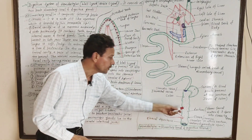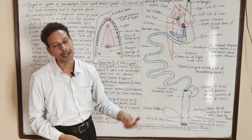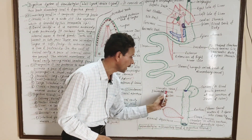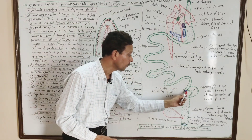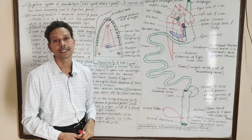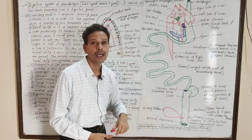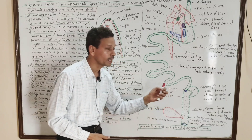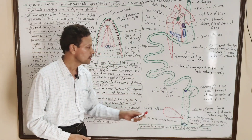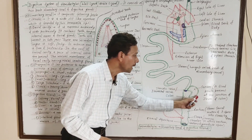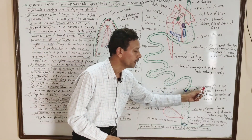The large intestine is again divided into two parts: the upper part is the colon, and at the junction of the ileum and the colon a valve is present — the ileocolic or ileocecal valve — as well as a blind pouch called the cecum.